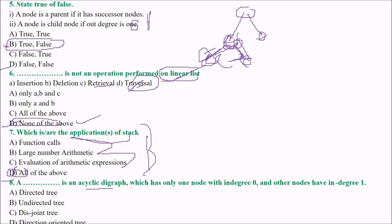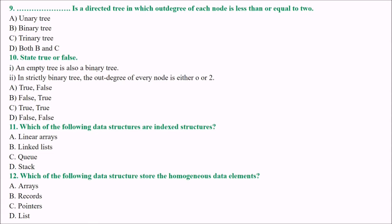Next: blank is an acyclic digraph which has only one node with indegree 0 and all other nodes have indegree 1. A directed tree is an acyclic digraph which has only one node with indegree 0 and other nodes with indegree 1 — this is absolutely correct, so the answer is A. The next question: blank is a directed tree in which the outdegree of each node is less than or equal to 2. The answer is binary tree — it is a directed tree where the outdegree of each node is less than or equal to 2.